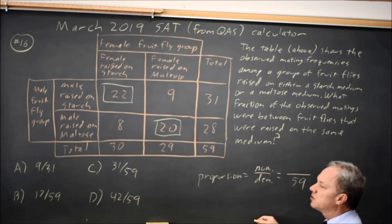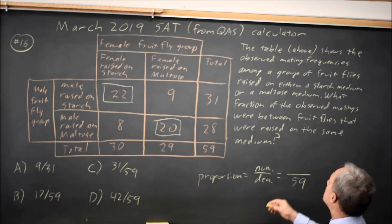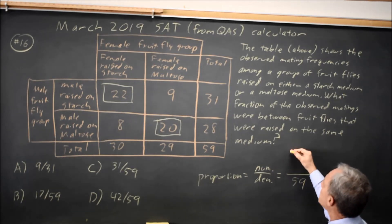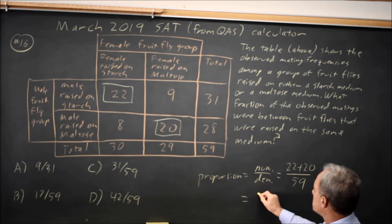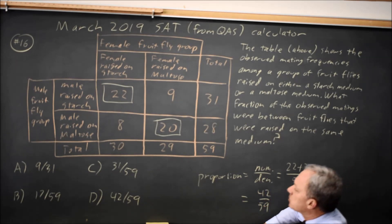And my numerator is, of those in the denominator, which ones count as a success. They're asking for what fraction are the same medium, and that's the 22 plus 20. So the proportion is 42 over 59, which is choice D.